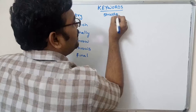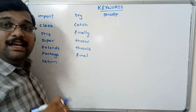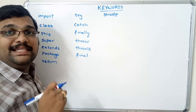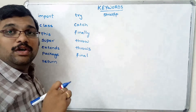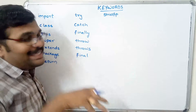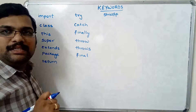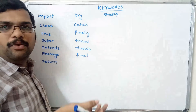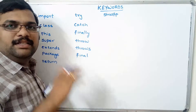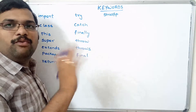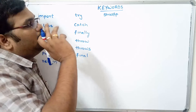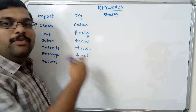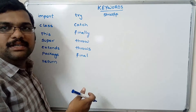The strictfp keyword — fp stands for floating point — is used to restrict floating point calculations. We will see all these keywords in detail while doing programming; this is just an overview.